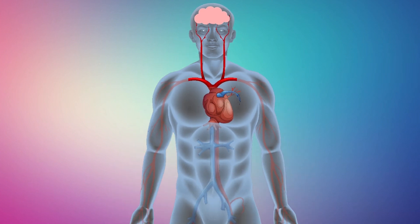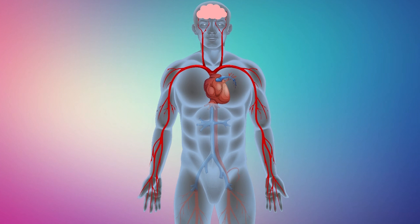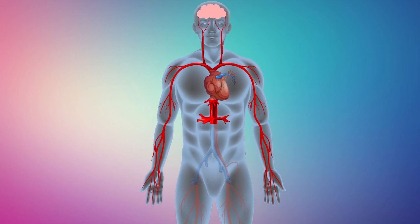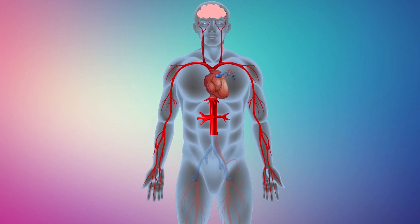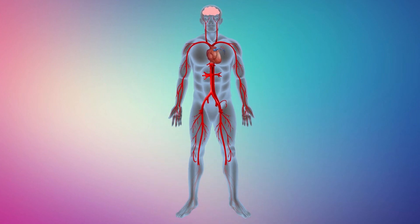From there, the blood continues to flow into our arms, then through the aorta, around the thorax and abdomen, and finally reaching both of our legs.